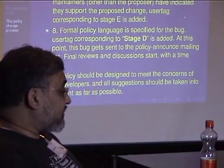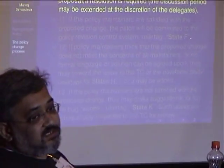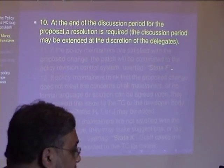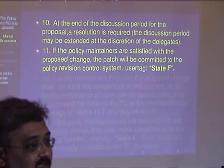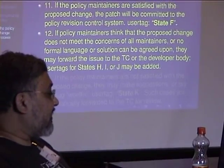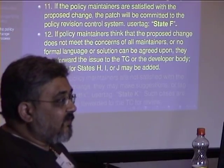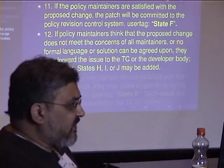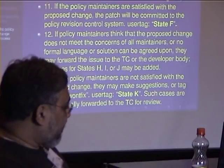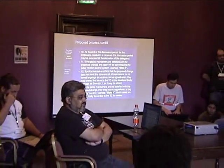At the end of the discussion period we need a resolution — we can't let it stagnate. If we believe the maintainers are satisfied, we can accept it. If the policy maintainers say the proposed change does not meet the concerns of all maintainers and no solution has been reached, then we pass the buck to the technical committee or the developer body for a GR, whatever seems appropriate. The state diagram is implemented using BTS user tags. Key differences from what we currently do: far more involvement of the technical committee when we don't know what's going on, and strict time limits just like we do for GRs — a finite period where a proposal is either accepted, shot down, or sent to the technical committee for resolution.